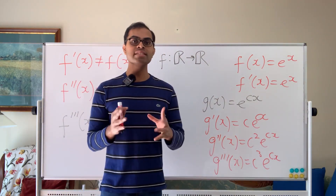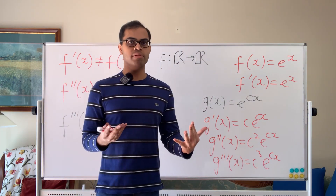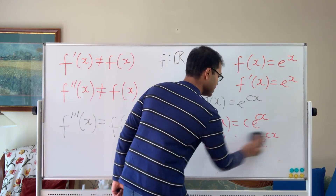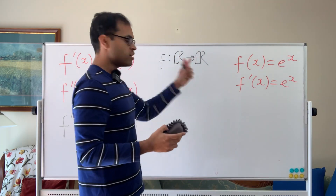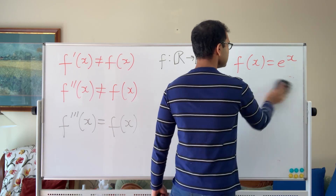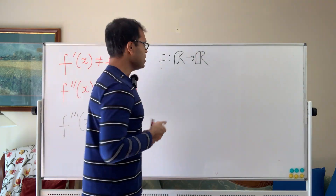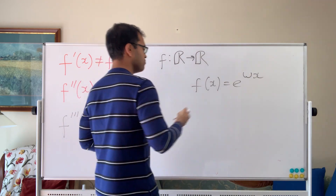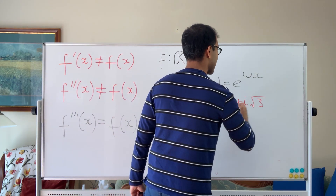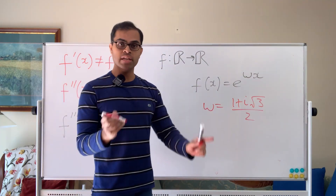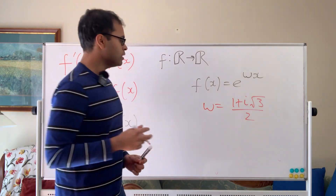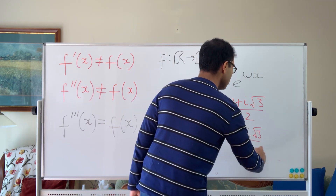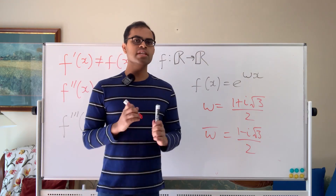This is where we dive into the world of complex numbers — we're looking for a cube root of 1 that lives in the complex plane. We define f(x) = e^(ωx), where ω is a cube root of 1. Explicitly, ω = (1 + i√3) / 2. That is a cube root of 1 — you can cube this in the complex plane and get 1. It's also e^(2πi/3) by Euler's formula. The conjugate of ω is also a cube root of 1: ω̄ = (1 − i√3) / 2, which is the other non-real cube root of 1. We're going to play around with this to find our function from R to R.